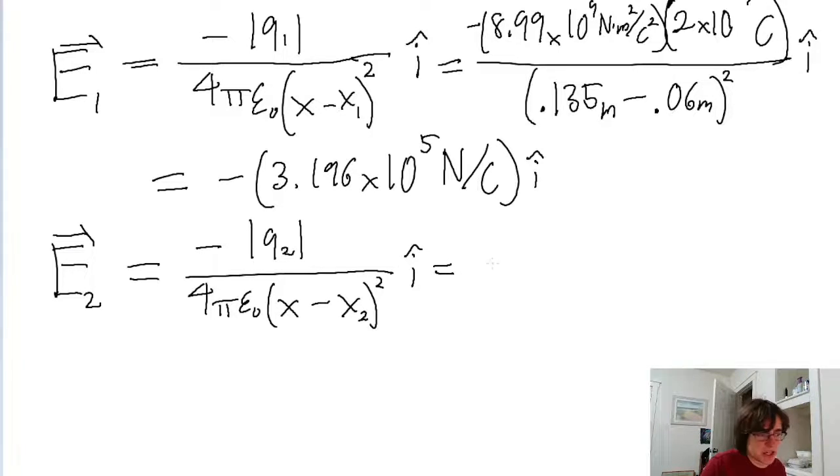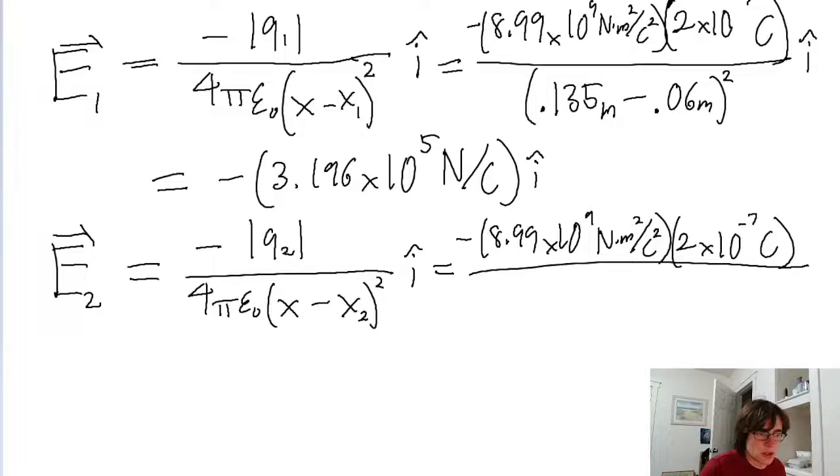Now we'll once again plug in our values. And they're the same values as the previous equation we wrote. There's going to be the negative. We're going to include the coulomb constant of 8.99 times 10 to the power of 9. The same charge magnitude of 2 times 10 to the power of negative 7 coulombs. All divided by the square of 0.135 meters, the midpoint position.